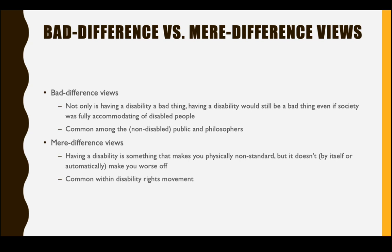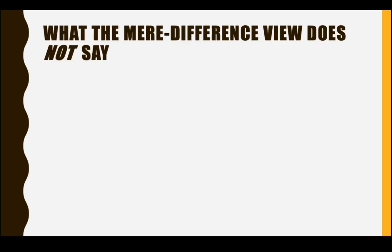To summarize: the bad difference view is that having a disability is a bad thing even if society was fully accommodating, while the mere difference view is the idea that having a disability makes you physically non-standard but doesn't inherently make you worse off. She starts by listing what the mere difference view does not say — giving a couple of misconceptions you might have about it and explaining why you don't have to accept certain statements just because you accept the mere difference view.